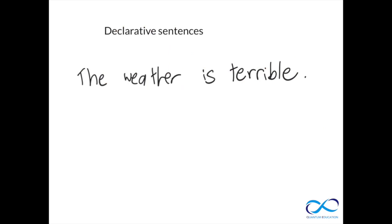The first type is declarative sentences. Declarative sentences are sentences that give the reader, audience, or hearer information. It's about expressing something, giving a statement, telling someone an emotion, an attitude, or an opinion. In this example, the person is making a statement: 'The weather is terrible' — they're handing across information, which is basically what a declarative sentence is.